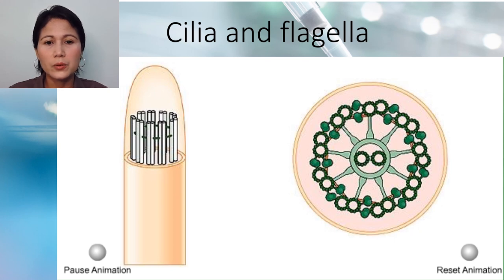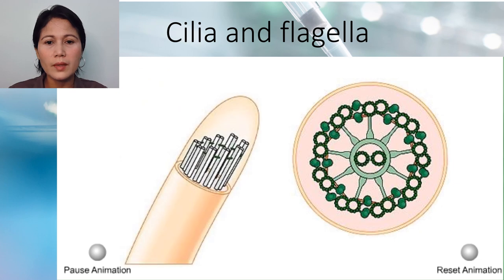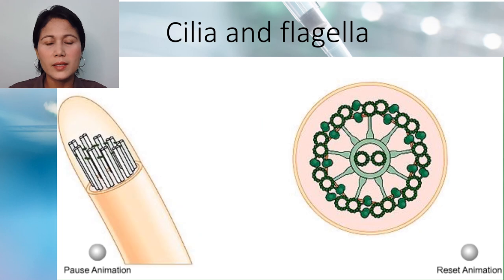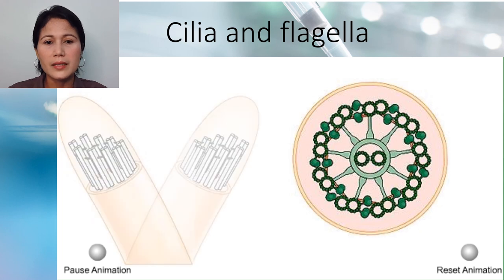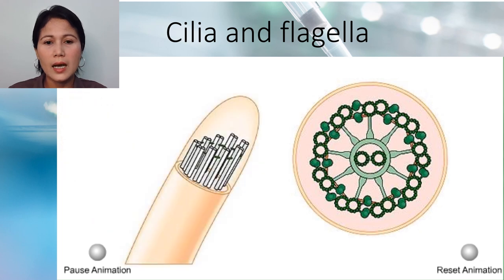The arm tilts downward and releases. Repeated strokes make the pairs slide past each other, causing the flagellum to bend. This process is done alternately so the flagellum bends one way then another.